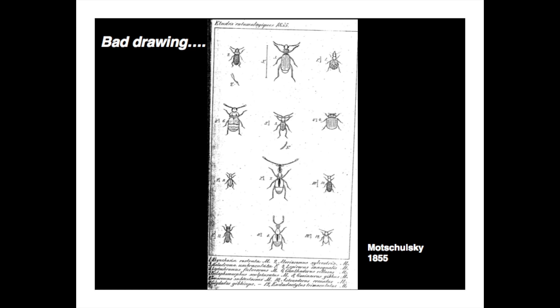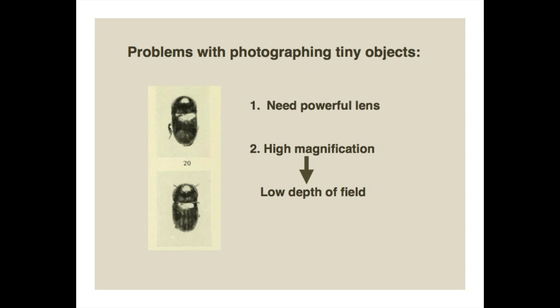But not everyone can draw, and that's a real problem. Loschelsky in 1855 was probably trying his best, but there's no way you can recognize what any of his beetles are from his drawings. His species descriptions were just a few sentences. So what he was doing was admirable, but ultimately just a waste of time.